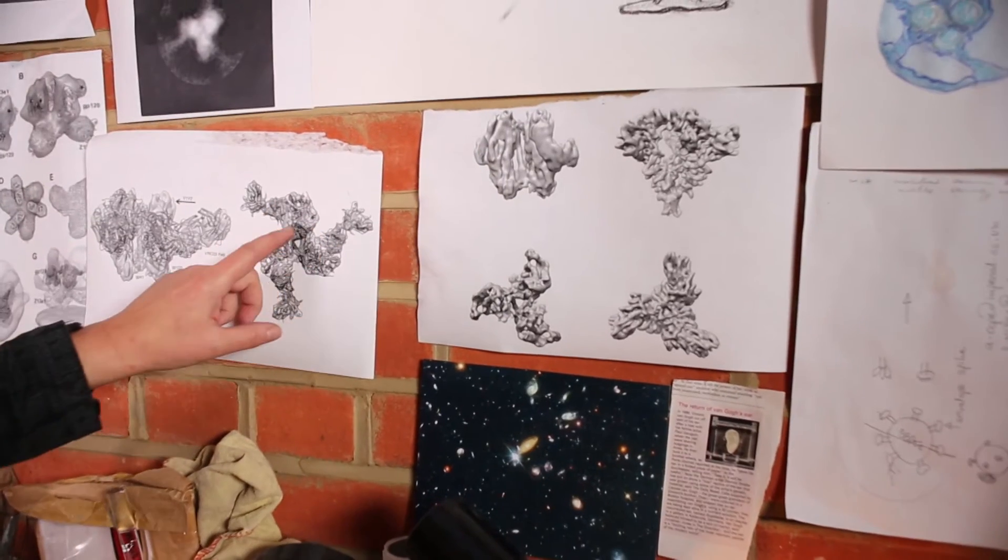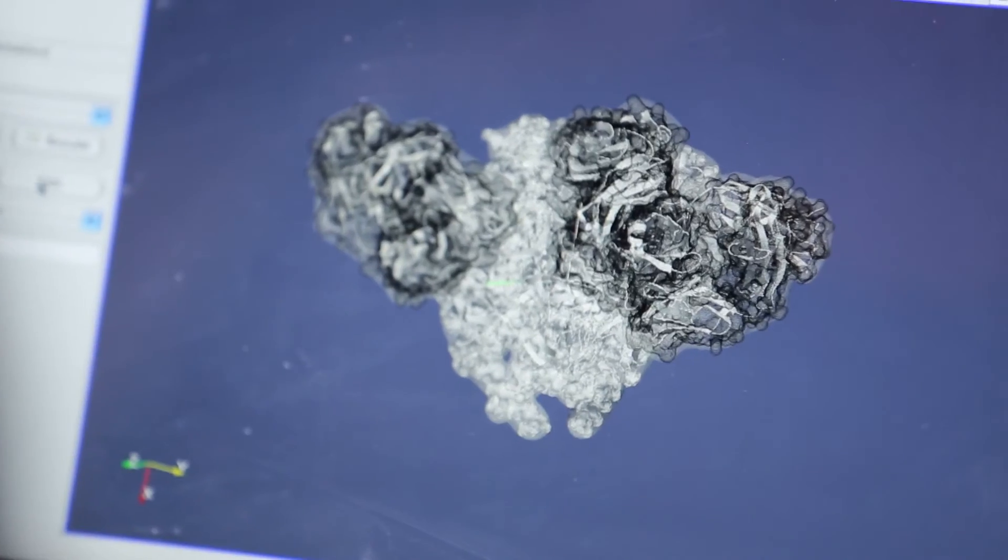So I got this single trimer. Now trimer is the mushroom shape that's attached to the envelope of the virus.